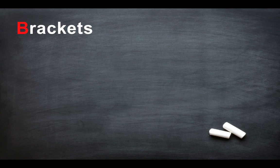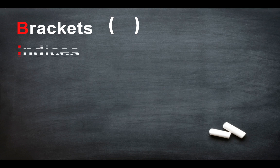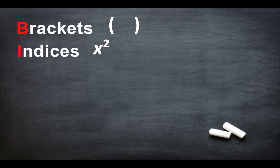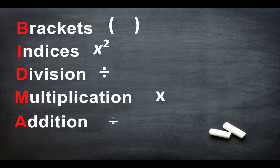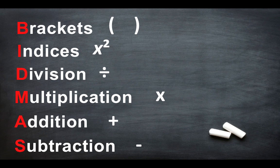So the B stands for brackets. If your calculation includes brackets, you should always work this part out first. Secondly, we have indices, which will be squared or cubed numbers. Next we have division, then multiplication, then addition and then finally subtraction. This is the order of operations, how you should work out the correct answer to a calculation with multiple operations.